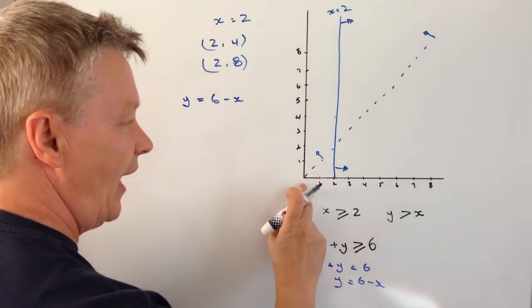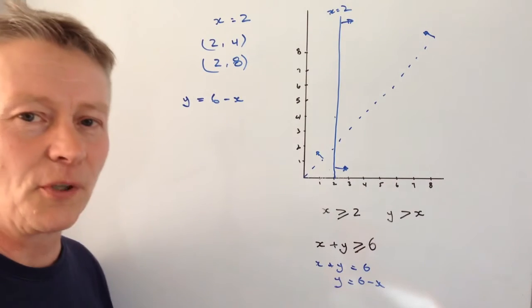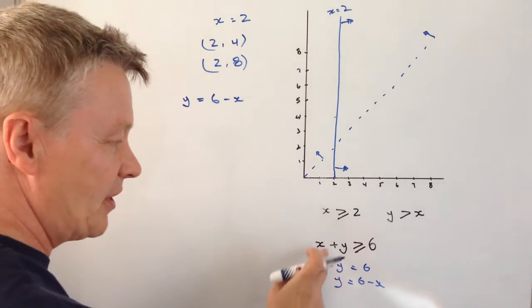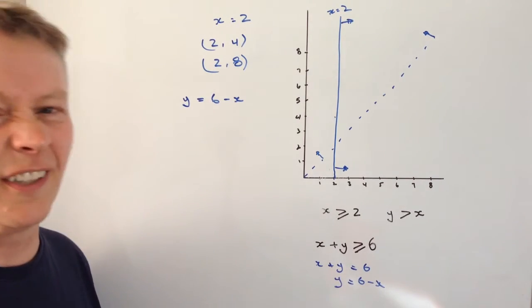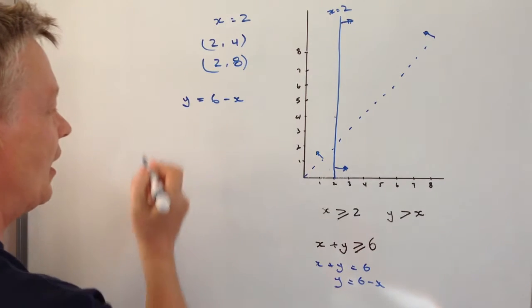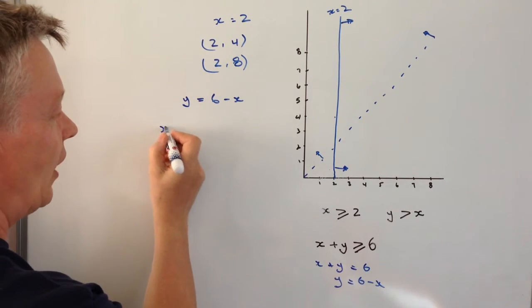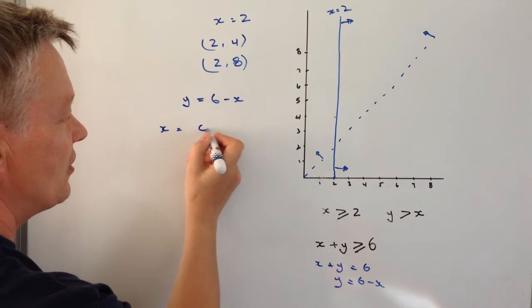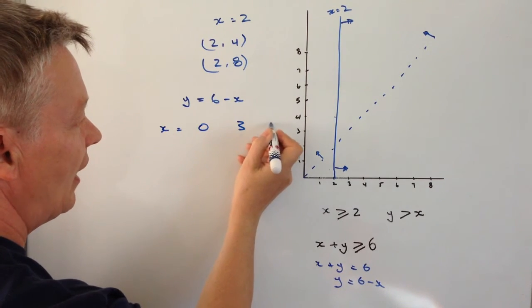Now I've got values of x all the way along here. I'm not going to worry too much about them because I happen to know this is going to be a straight line. So I only need to plot a couple of different points. And the points I'm going to choose is when x equals 0, 3 and 6.